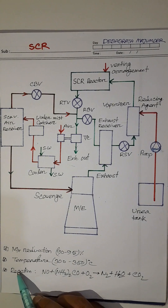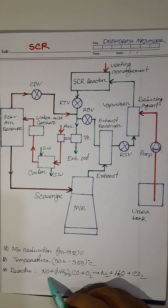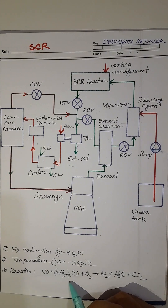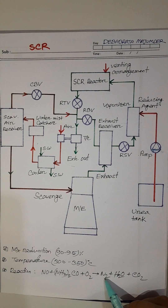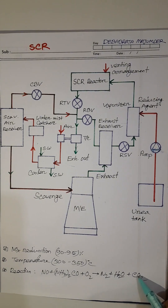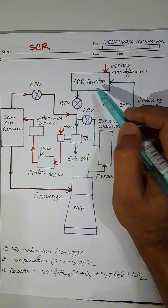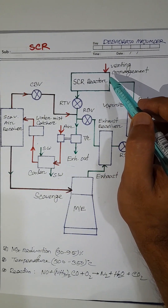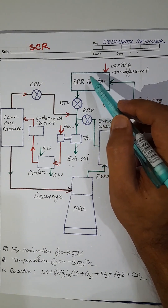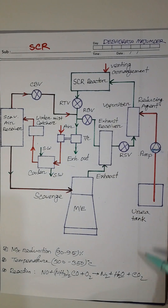Which chemical reaction occurs? Nitric oxide plus urea plus oxygen — this converts into nitrogen plus water plus carbon dioxide. That means in this chamber, the NOx is converted into nitrogen gas. Carbon dioxide is also produced here.